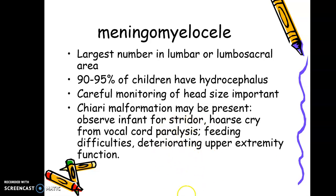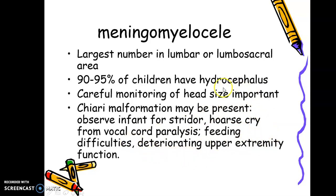Deteriorating upper extremity function occurs because the brachial plexus is also affected, as the brainstem herniates through the foramen magnum in Arnold-Chiari malformation. Observe for stridor indicating worsening breathing quality, hoarse cry indicating vocal cord paralysis, feeding difficulty due to glossopharyngeal nerve involvement with impaired gag reflex, and deteriorating upper extremity function due to brachial plexus involvement.